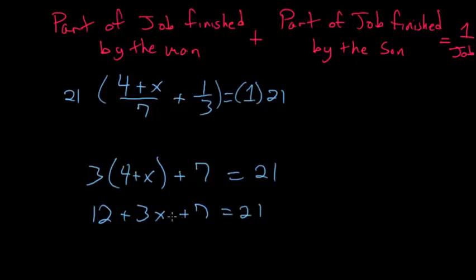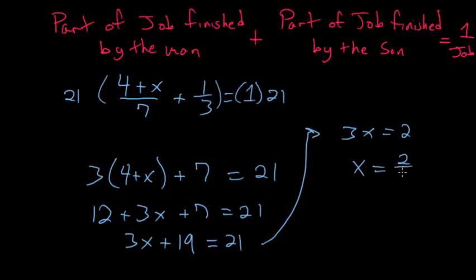And now 12 plus seven is 19, so we have 3x plus 19 is 21. Subtracting 19 from each side, we have 3x is equal to 2. Dividing each side by three, we have x is equal to two-thirds.